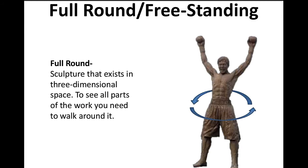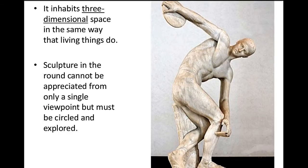Freestanding or full round sculpture is sculpture that exists in three-dimensional space. To see all parts of the work, you need to walk around it. It inhabits three-dimensional space in the same way that living things do. The sculpture in the round cannot be appreciated from only one single viewpoint, but must be circled and explored.